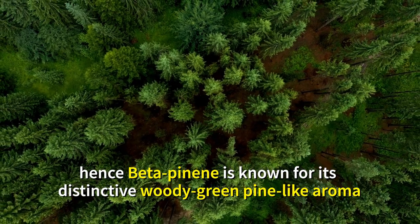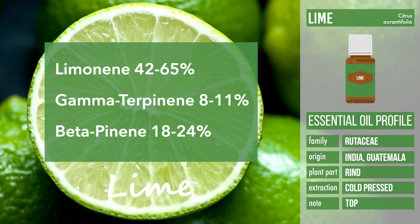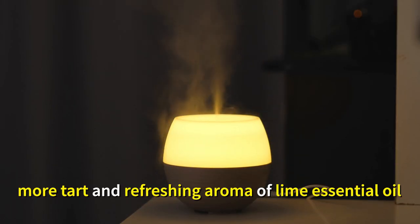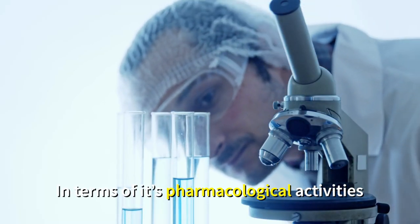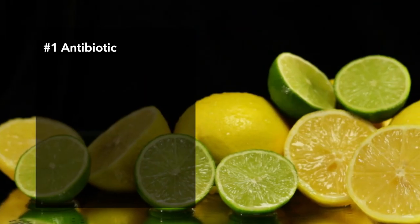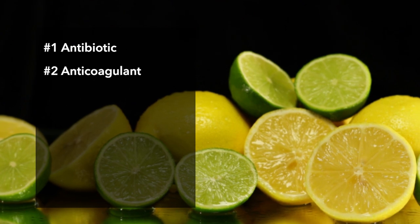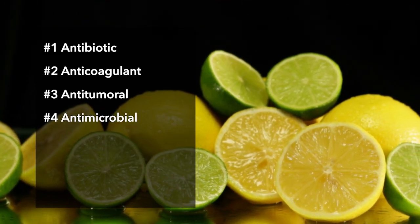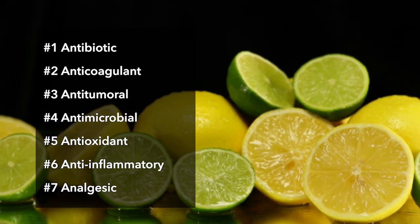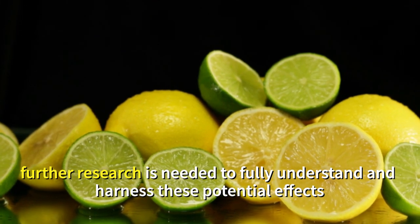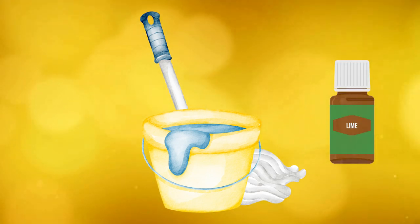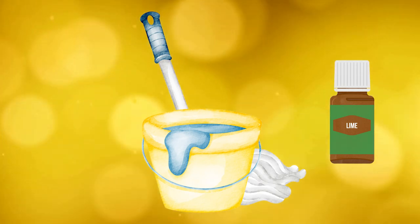Forest trees release significant amounts of beta-pinene, hence beta-pinene is known for its distinctive woody, green, pine-like aroma. Since lime essential oil has a higher concentration of beta-pinene than lemon, this may explain lime's more tart and refreshing aroma. Beta-pinene has been studied for its wide range of potential effects including antibiotic resistance modulation, anticoagulant, anti-tumoral, antimicrobial, antioxidant, anti-inflammatory, and analgesic properties, though further research is needed. Beta-pinene is also a great addition to household cleaning solvents, so do add a few drops of lime to your pail of water when mopping the floor.